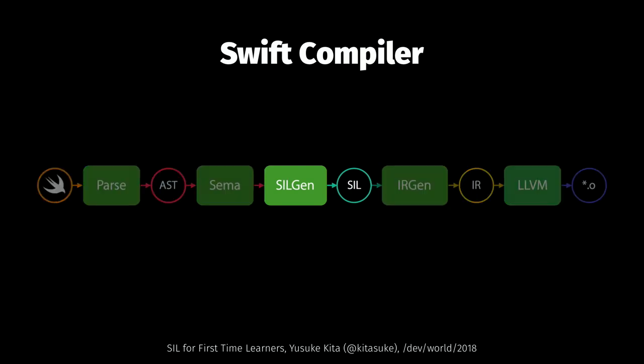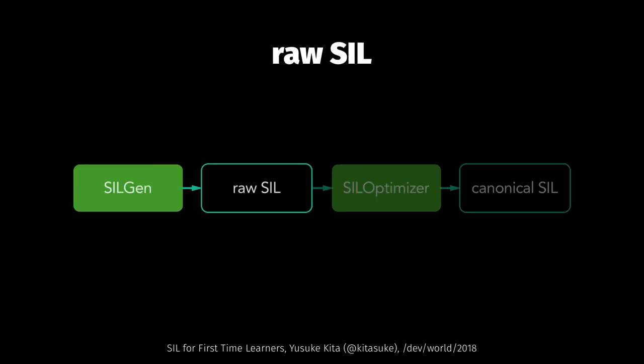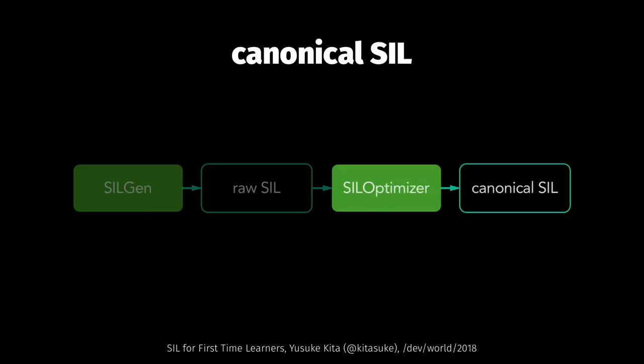Today we are going to focus on the SIL part only. If I divide it into two steps: SILGen actually generates raw SIL, which is the first step of SIL. After that, the SIL optimizer generates canonical SIL. We're not going to talk about the exact difference between those two types of SIL in this talk, but if you're curious about detailed optimizations, you can check that out later.